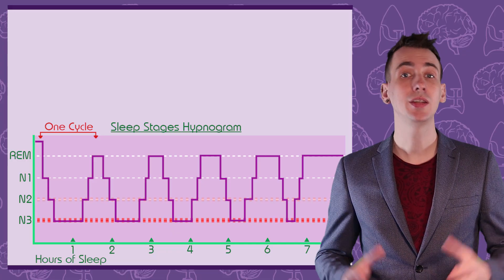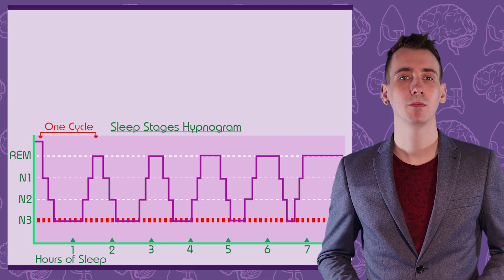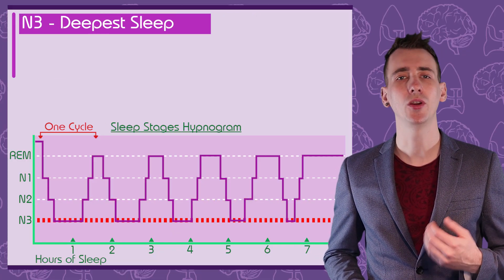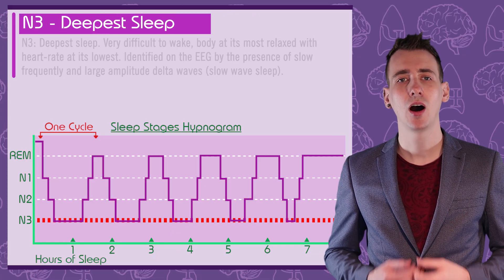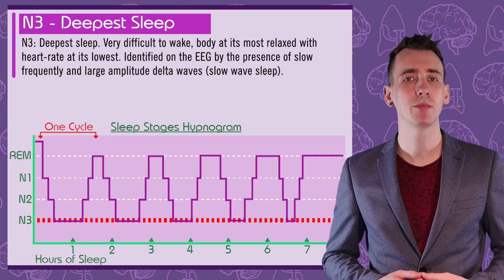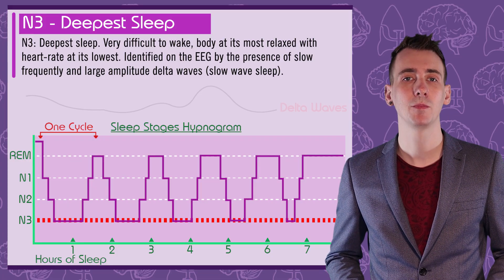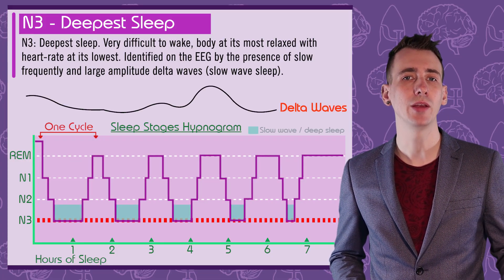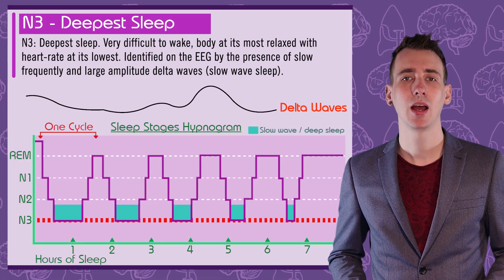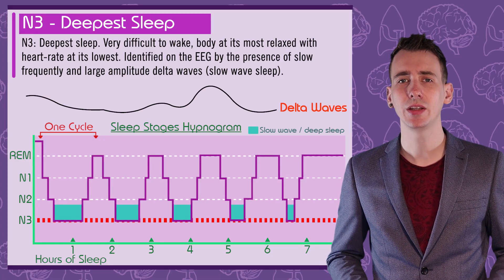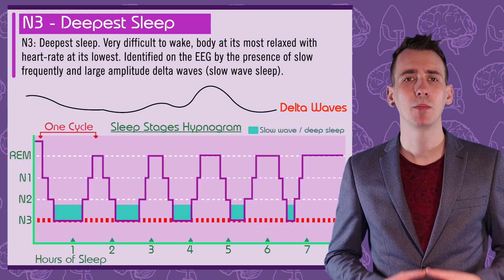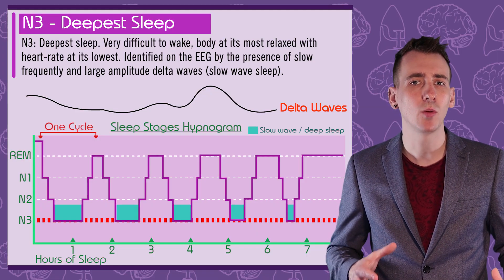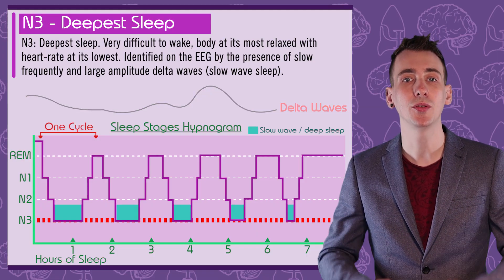N3 is the deepest sleep. You're hard to wake and the body is fully relaxed. Heart rate and body temperature falls and the eyes are still. This stage is known as slow wave sleep, and can be identified on the EEG by slow frequency but high amplitude waves called delta waves.